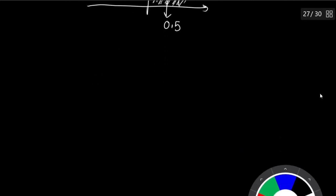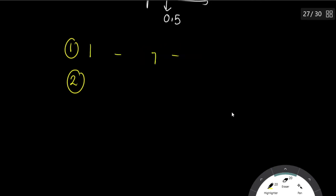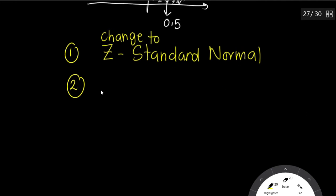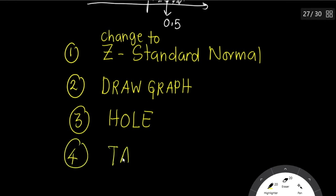There are four steps when Z is not given. Step one: always make it standard normal — if they give you X, change it to Z using the formula. Step two: draw the graph. Step three: find the hole (the nose trill). Step four: look up the table. Remember these four steps — they will help you.